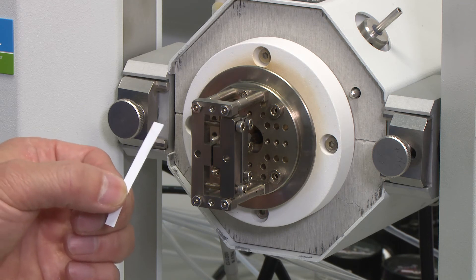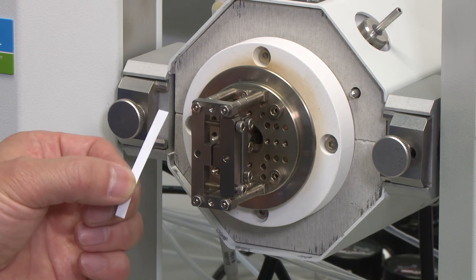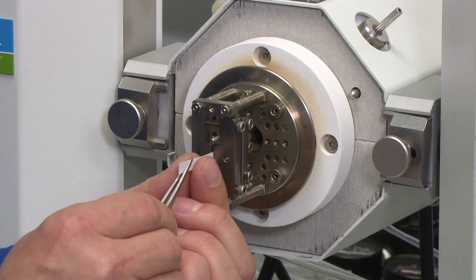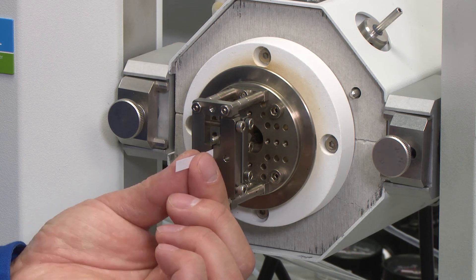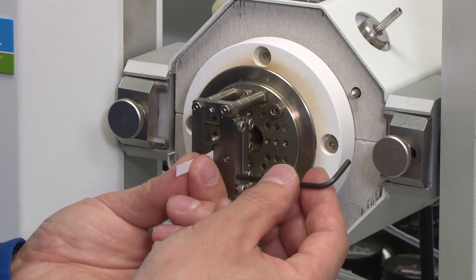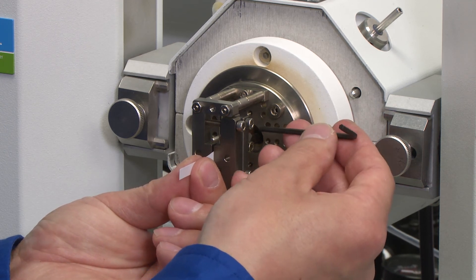The width of the sample is typically 5 millimeters wide. So we can slide in the sample into the inner clamps. While holding the sample straight, the inner clamp is tightened.